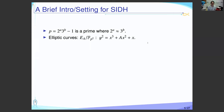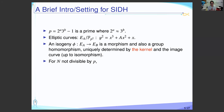First, we give a very brief intro for SIDH. In SIDH, we have a prime of the following form, an elliptic curve, and it forms a group structure. An isogeny is a morphism between elliptic curves. You can think of it as a rational polynomial, and it is also a group homomorphism. It can be uniquely determined by the kernel and the image curve, up to isomorphism.